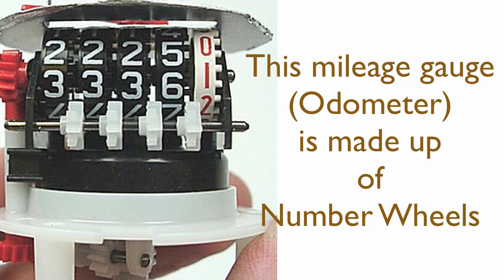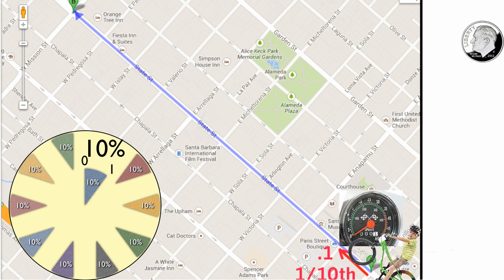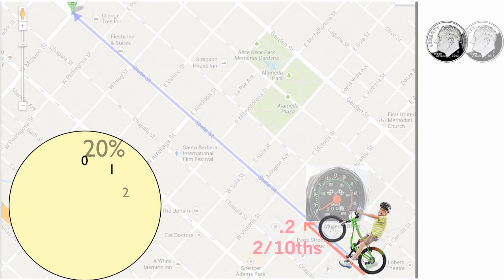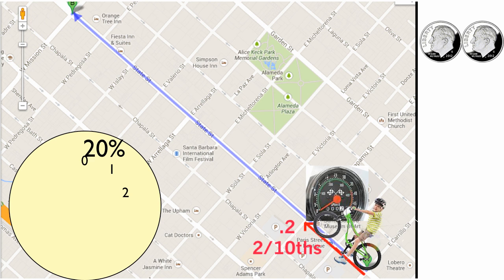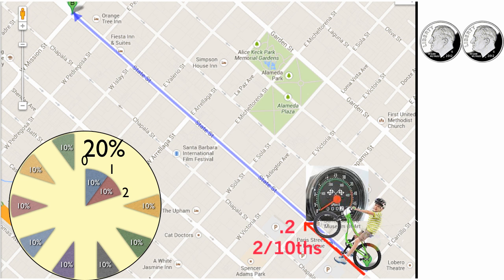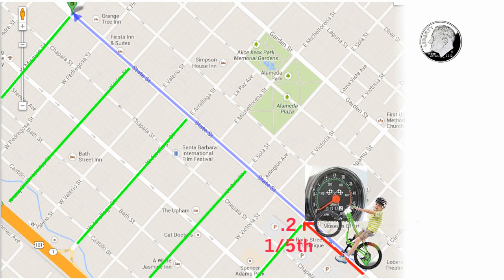On this mileage gauge, which is opened up here, can you see that the white numbers are a number wheel, counting tenths of a mile? Let's get back to our map, because Chris is moving forward another block and finding another dime. Can you see that we can divide the mile into ten equal blocks, and also with green lines, into five equal distances of two blocks each? We show it here with the green lines.